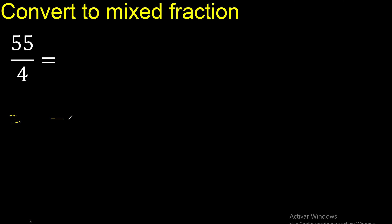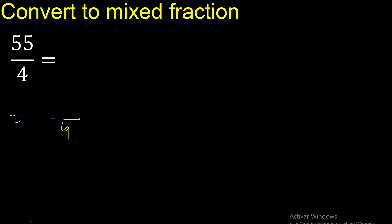First, the same number here. Multiply by which number is nearest to 55 but not greater? Multiply by 15 is 60 — 60 is greater. Multiply by 14 is 56, is greater.